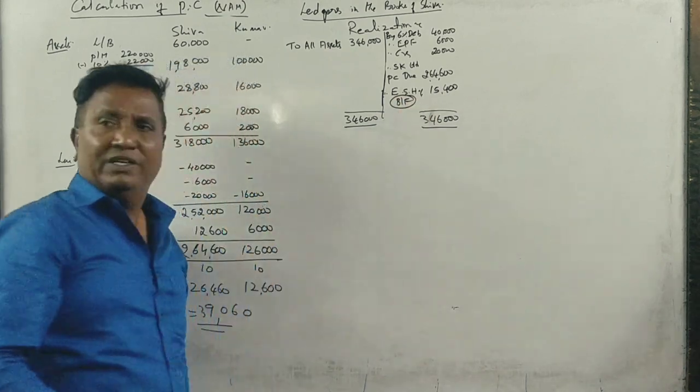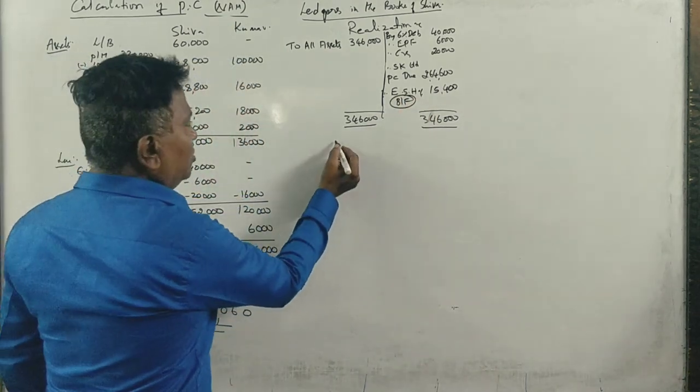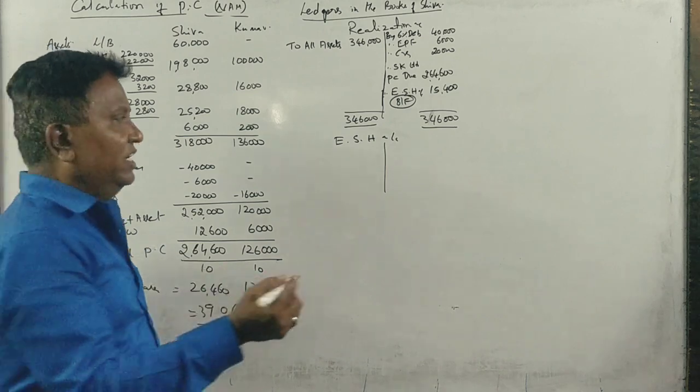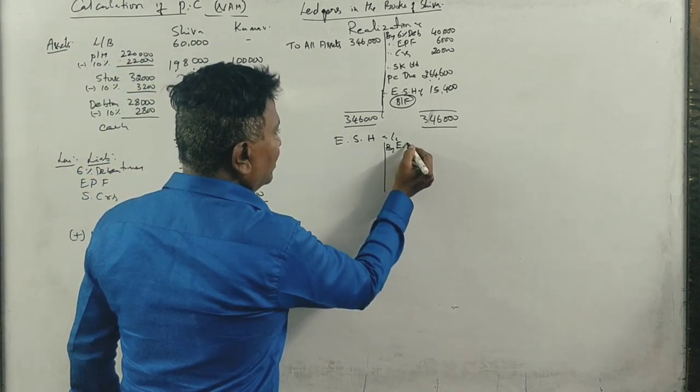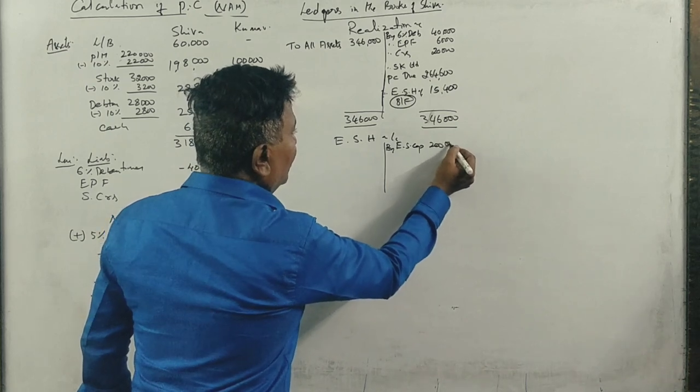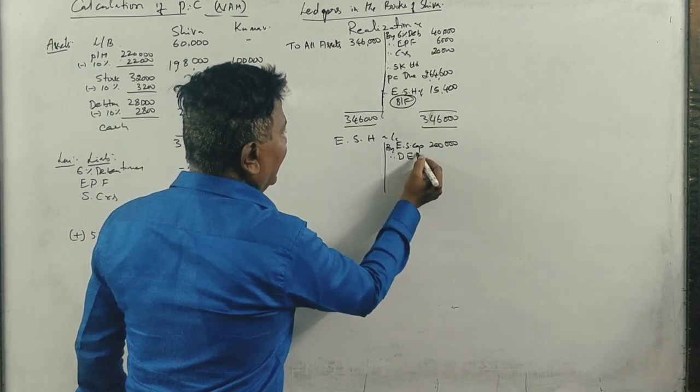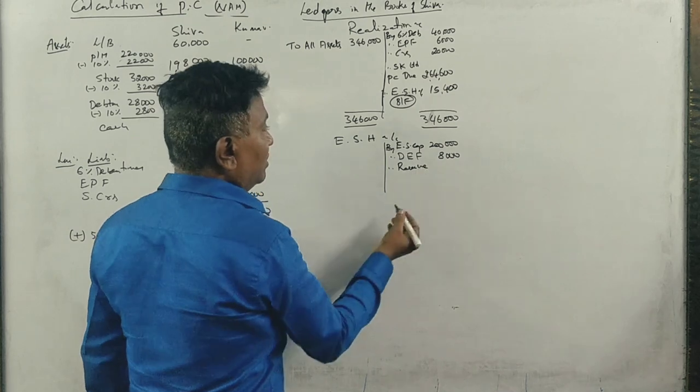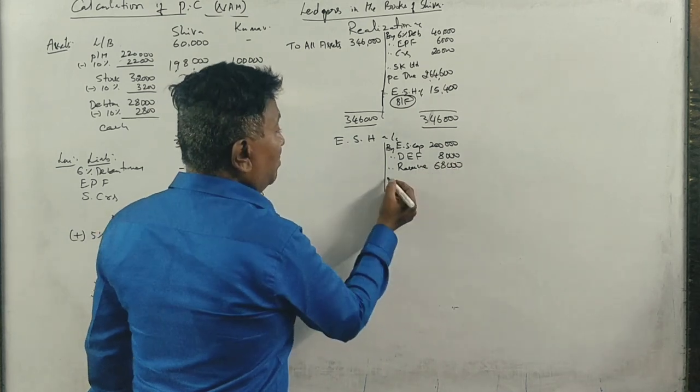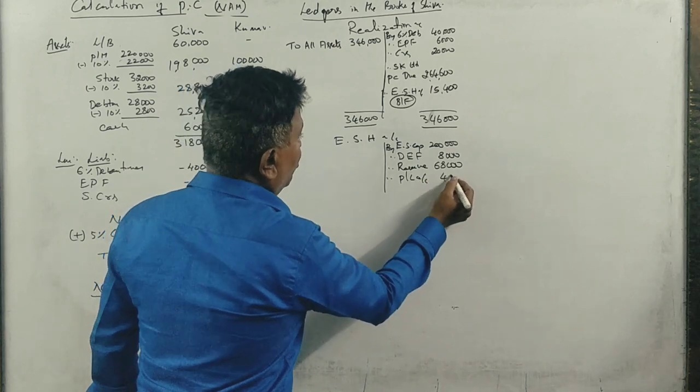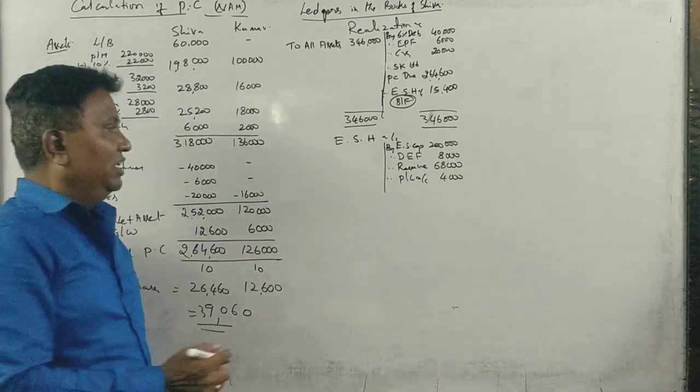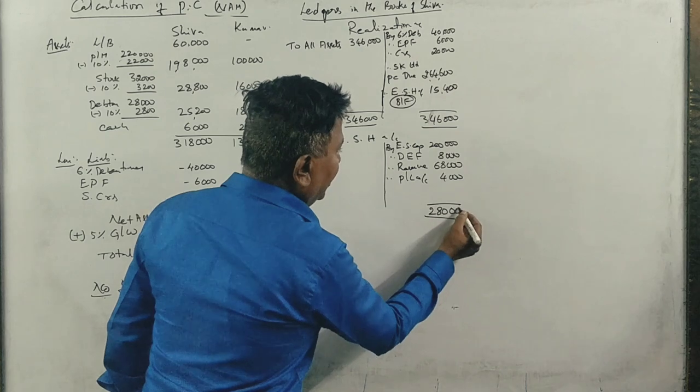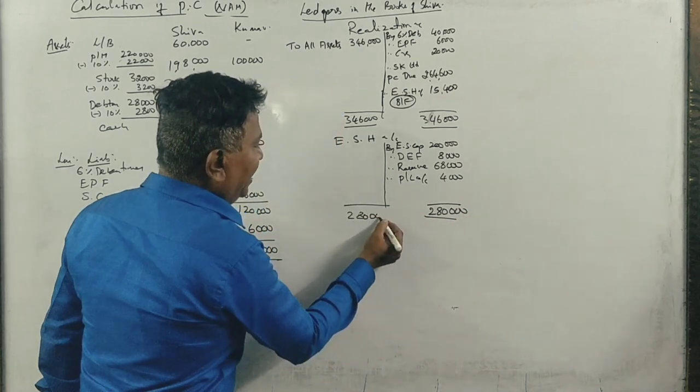Next, equity shareholders account. This is the equity share capital 2 lakhs. Dividend equalization fund 8,000. Reserves 68,000. Profit and loss account 4,000. This is Shiva. The total of Shiva is 2 lakhs 80,000 correct? 2 lakhs 80,000 Shiva.